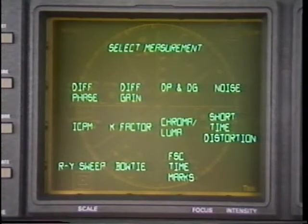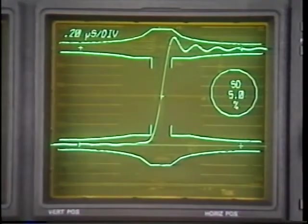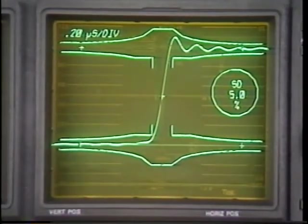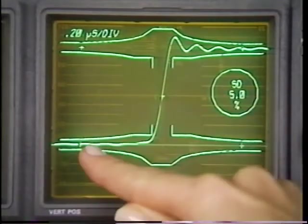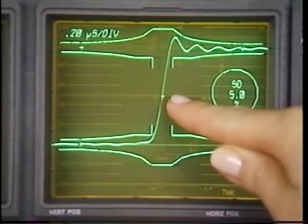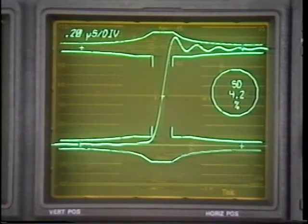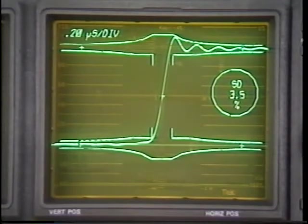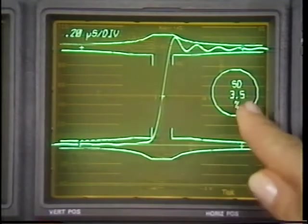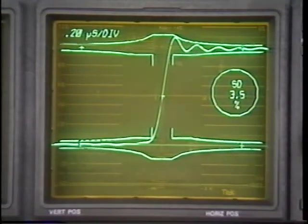The 1780R has an electronic short-time distortion graticule that can be used in much the same way. To make a measurement, position the waveform to line up vertically with the upper and lower crosses, and make sure that the transition passes through the small cross in the center. Then use the large front panel knob to adjust the size of the graticule until it just touches the waveform. At this point, you can read the amount of short-time distortion from the screen. For this signal, we get a reading of 3.5% SD.